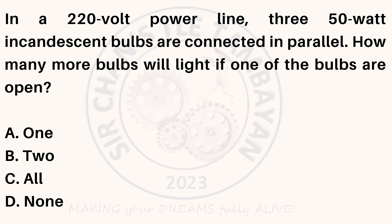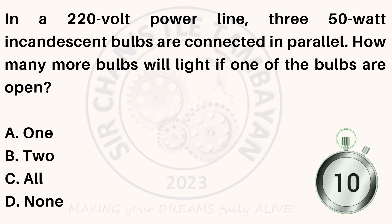In a 220-volt power line, 350-watt incandescent bulbs are connected in parallel. How many more bulbs will light if one of the bulbs are open? A. 1. B. 3⅓.